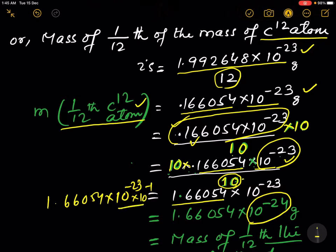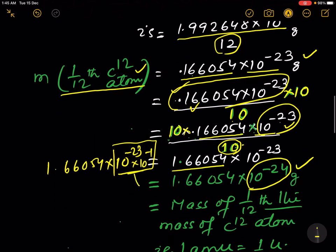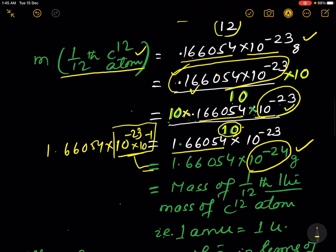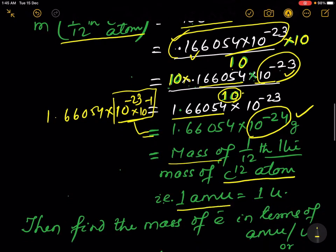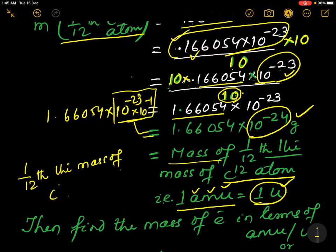This 10 becomes 10⁻¹, making the overall power 10⁻²⁴. That gives us the mass of 1/12 of a C12 atom. That is 1 amu, or 1 u. So 1/12 the mass of a C12 atom is 1.66054 × 10⁻²⁴ grams, which equals 1 u.